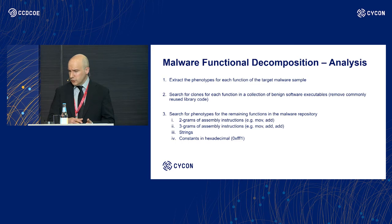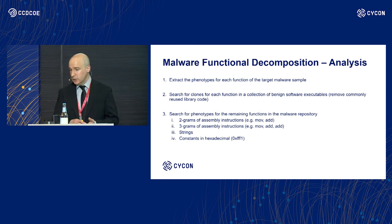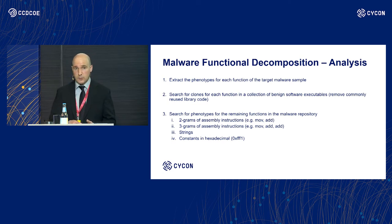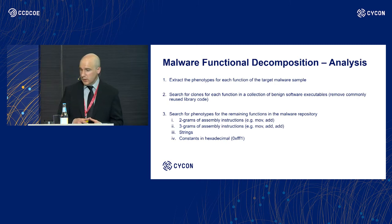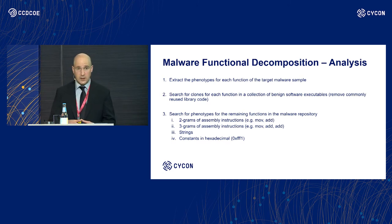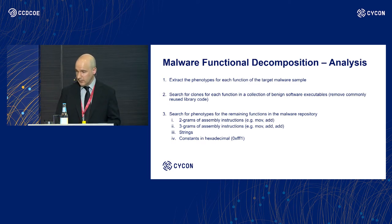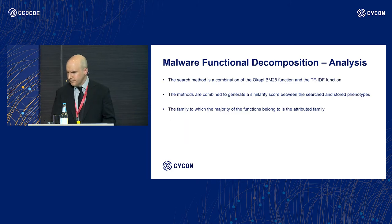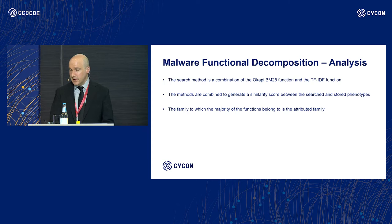During step two, we eliminate a certain number of functions. Of the remaining functions, we search their phenotypes in our malware repository. Precisely, the phenotypes being used are 2-grams of assembly instructions, 3-grams of assembly instructions, strings, and constants. All the constants are converted to hexadecimal format. The search method is a combination of the OKP BM25 and the TF-IDF function. BM25 is a function used a lot for text retrieval and is used in Elasticsearch.